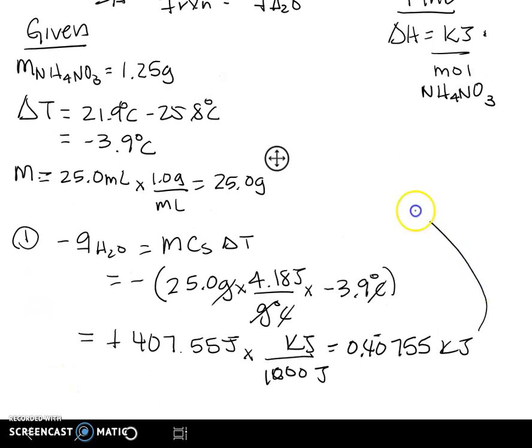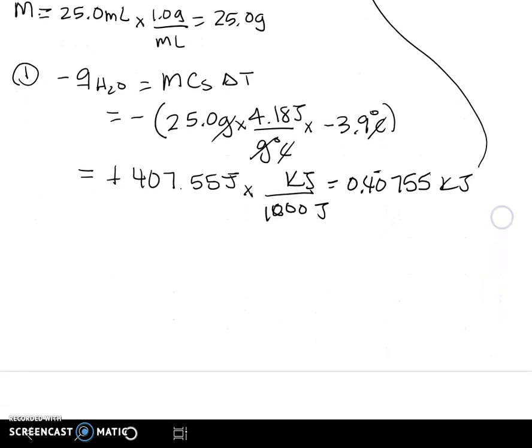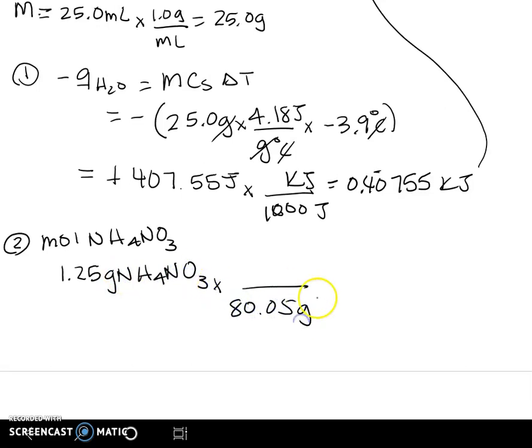So now we've got our kilojoules. This is our numerator. How do we find our denominator? We need moles of ammonium nitrate. So step two, let's find moles of NH4NO3. And we know how to do this. We're going to start with our 1.25 grams of our ammonium nitrate. And we'll simply use the molar mass. So 80.05 grams of ammonium nitrate in 1 mole of ammonium nitrate. And that's going to give us 0.0156152. But let's look at sig figs. We're going to need three of them, and this will be moles.